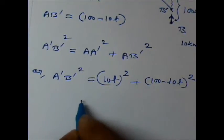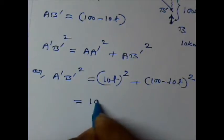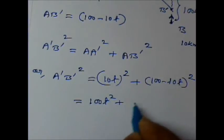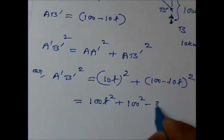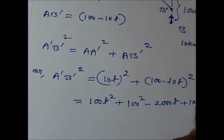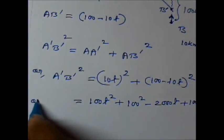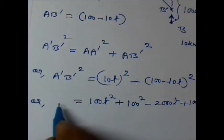Now, if I expand it, this becomes 100T squared, minus 2 into 100, 200 into this, so 2000T plus 100T squared. So this is A dash B dash whole squared.